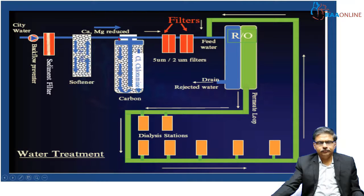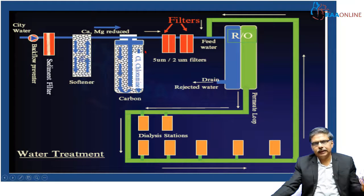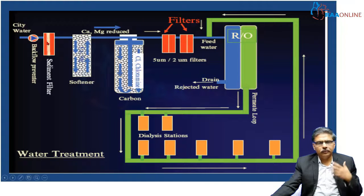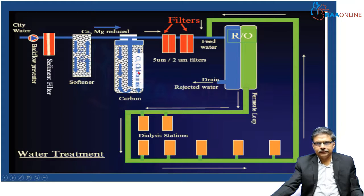City water enters the water treatment plant. This is a schematic representation of a water treatment plant. The city water may contain physical impurities, chemical impurities, and biological impurities. Biological impurities may include fungus, bacteria, and so many things. Chemical impurities may be ions like calcium, chloramine, and chlorine. Physical impurities would mean sand and dust. You have many filters here — sediment filters and carbon filters — then the water goes through a softener, then a deionizer. These steps remove the physical and chemical impurities.